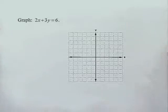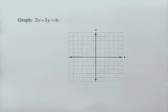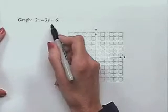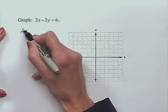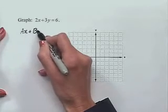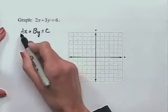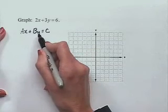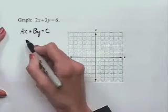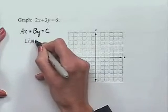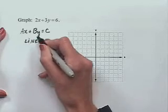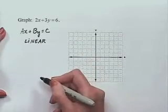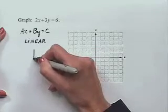Let's graph 2x plus 3y equals 6. We want to recognize that this has the form A times X plus B times Y equals C — a number multiplied times X to the first power plus a number multiplied times Y to the first power equals a constant. We can recognize this as a straight line, which we call linear. To graph a straight line, we simply need to graph two points.